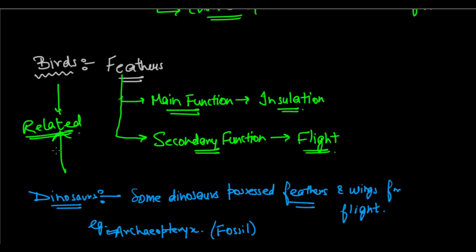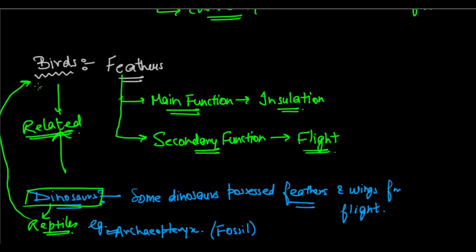Since they are related, we could say that birds came from dinosaurs. But since dinosaurs were also reptiles, it was concluded that birds have evolved from reptiles — they evolved from dinosaurs, and dinosaurs were reptiles themselves. So birds evolved from reptiles. And this is another example of evolution by stages.